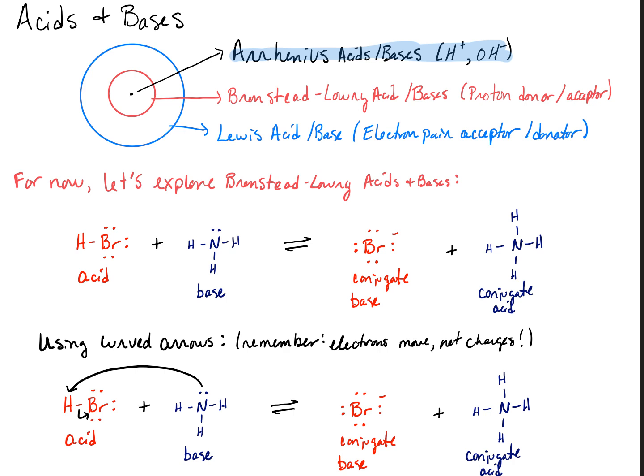That's simply that you've got H+ and OH-. More encapsulating is the Bronsted-Lowry acids and bases. So that definition is that you've got proton donors and proton acceptors. And finally, the one that is most encapsulating of types of acids and bases is that of a Lewis acid and base. And Lewis acids are electron pair acceptors, and Lewis bases are electron pair donors.